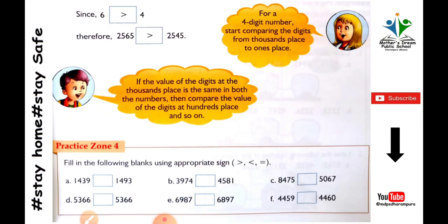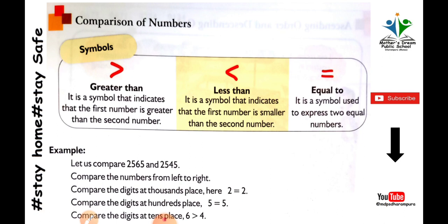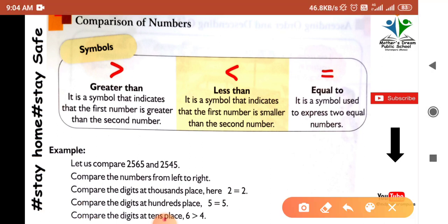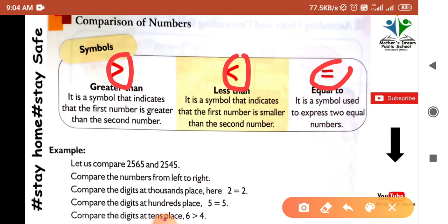Let's start. First is how to compare numbers. In this topic we have three signs: first is greater than, second is less than, and third is equal to. The greater than sign is a symbol that indicates that the first number is greater than the second number.